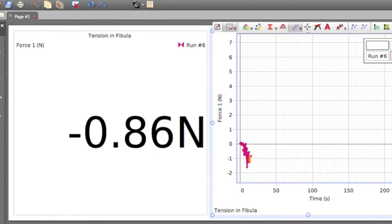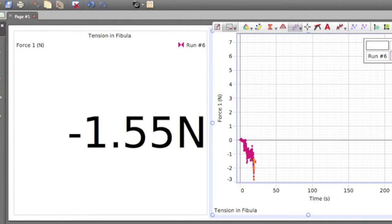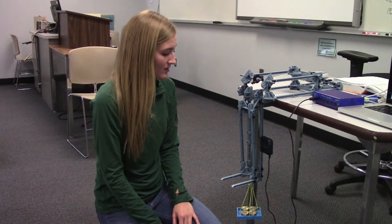And using the PASCO system, we discovered it ranges between around negative 0.95 to negative 1.0-ish. And it's negative because it's in tension.